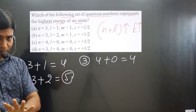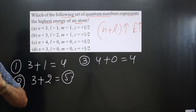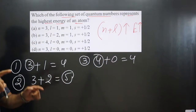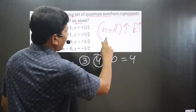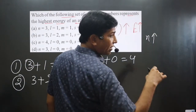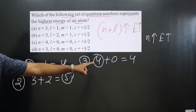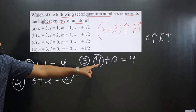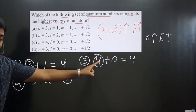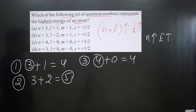Whenever the n plus l value is the same for different sets of quantum numbers, we determine energy based on the n value — higher the n value, higher is the energy. In the third set, n equals 4, compared to n equals 3 in the first set. So the third set of quantum numbers has higher energy than the first set.